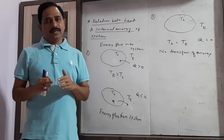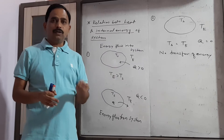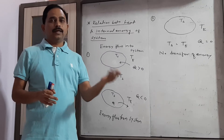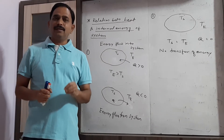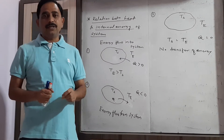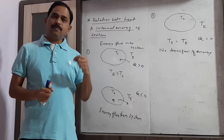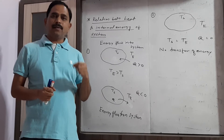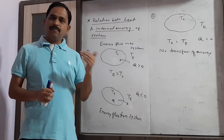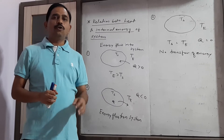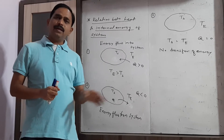Anything outside the system which has a direct effect on the system is called the surrounding. There are certain variables with the help of which we always describe the behavior of a thermodynamic process or thermodynamic system — those are called thermodynamic variables: pressure, volume, and temperature.